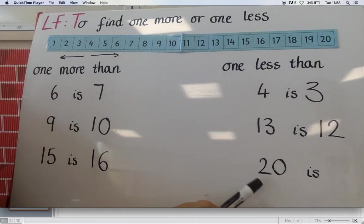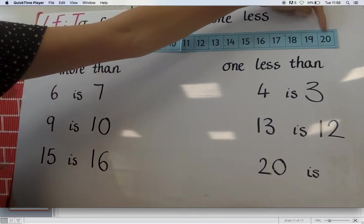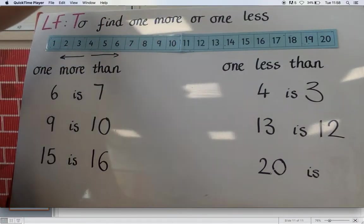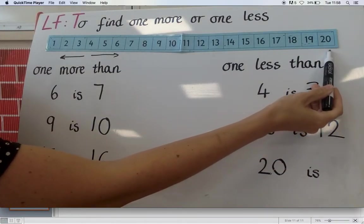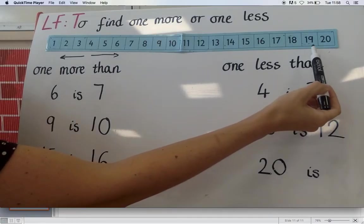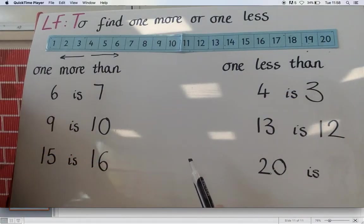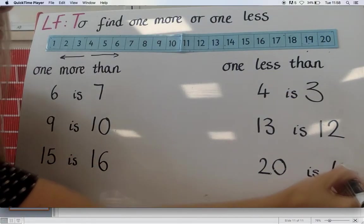And then the last one here. Twenty. All the way down here on our number line. So if you found your number. One less than twenty. Which way are we going? Nineteen. One less than twenty is nineteen.